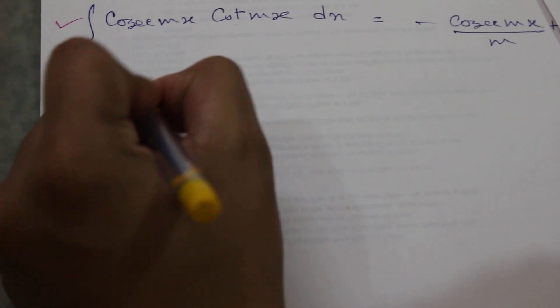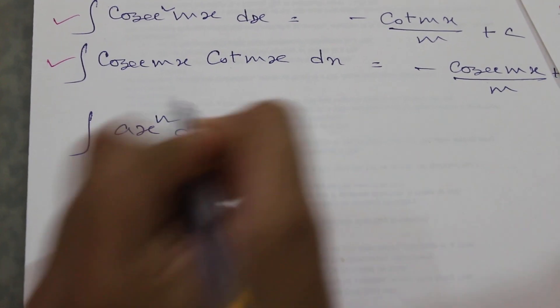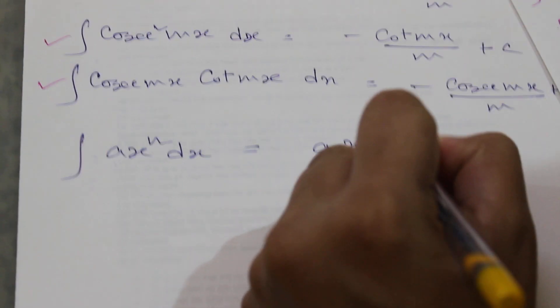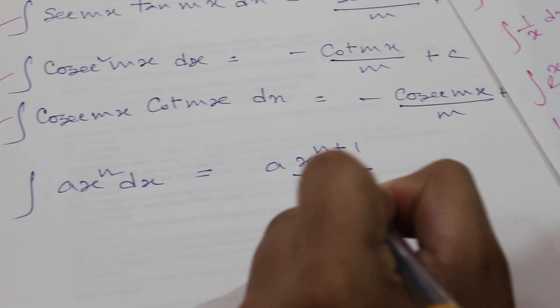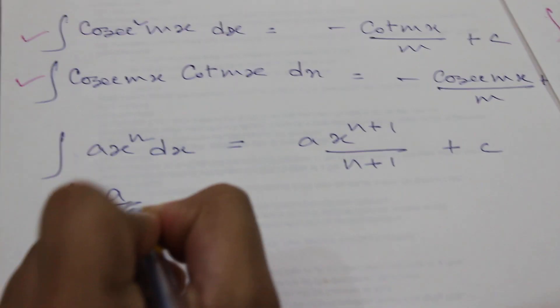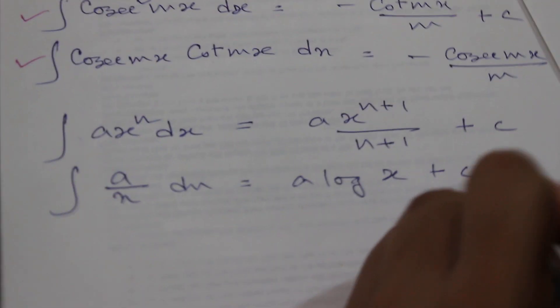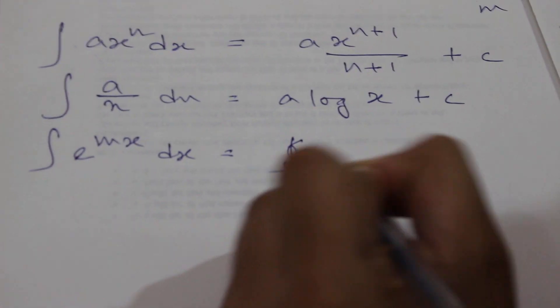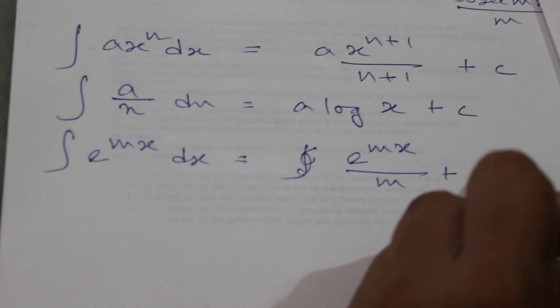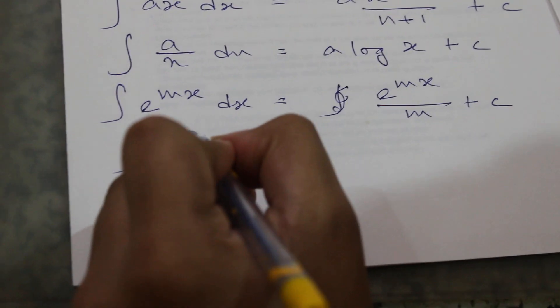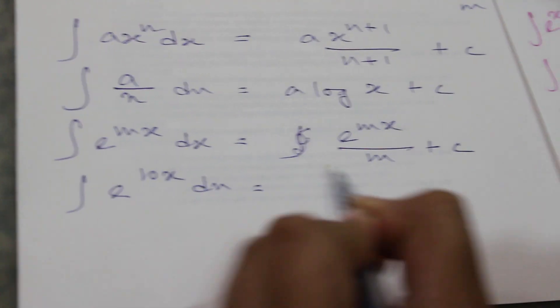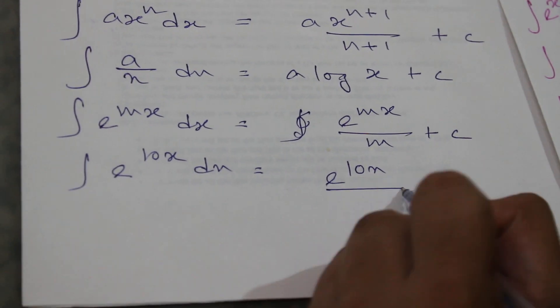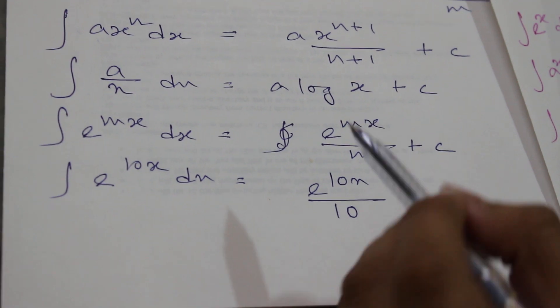For algebraic multiple angle functions: integration of ax to the power n dx gives ax to the power n plus 1 divided by n plus 1, plus c. For a divided by x dx, we get a log x. For e to the power mx, we get e to the power mx divided by m, plus c. For example, integrating e to the power 10x gives e to the power 10x divided by 10 — the coefficient of x is divided.